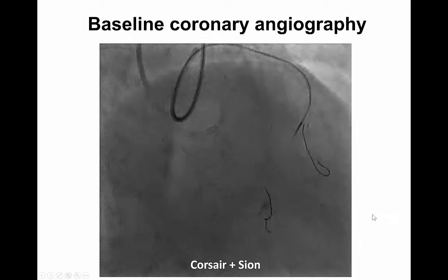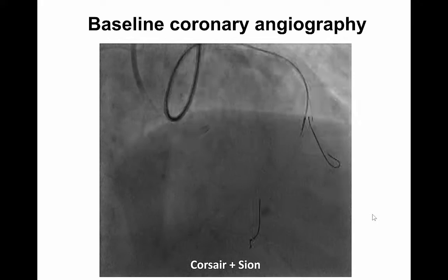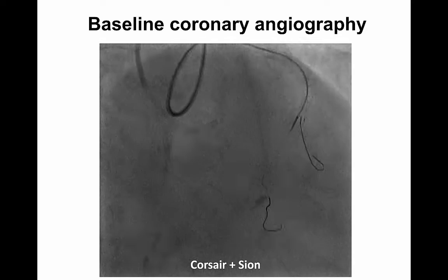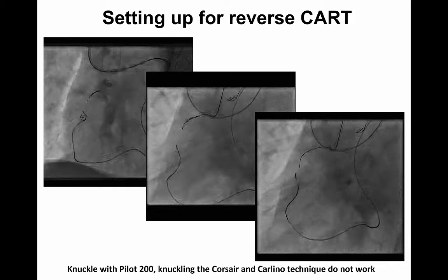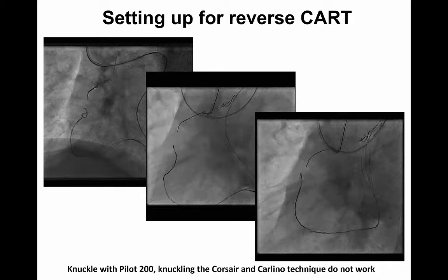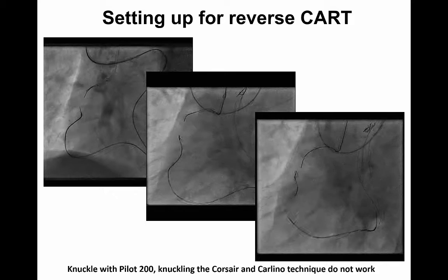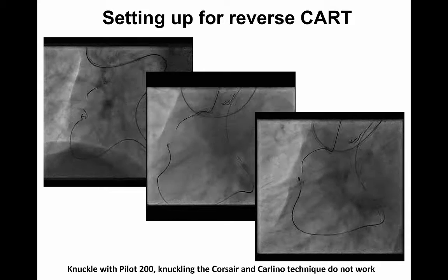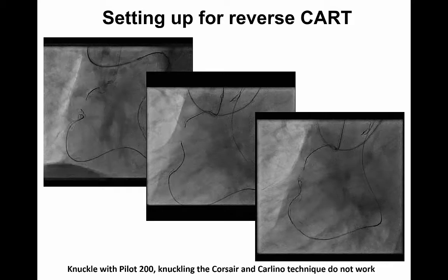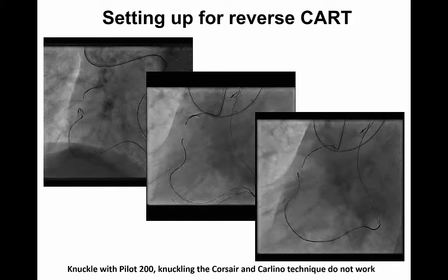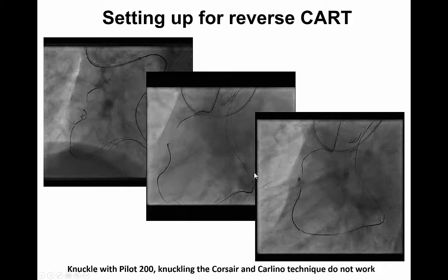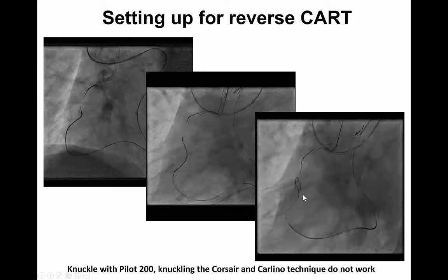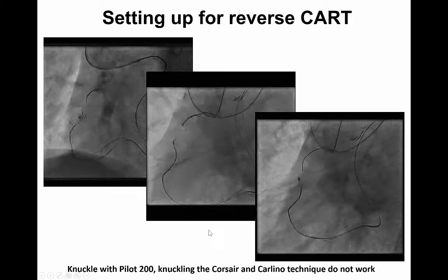This is a Corsair microcatheter plus a Sion wire surfing the septal collateral, going all the way back into the distal RCA, and then we set up for reverse CART. However, we encountered a spot of very focal resistant tissue — probably calcium — that could not be overcome. First we tried with a Pilot 200 wire that was knuckled, then we knuckled the Corsair itself, and we also tried the modified Carlino technique with a retrograde contrast injection from the microcatheter in the mid-RCA. Nothing worked.